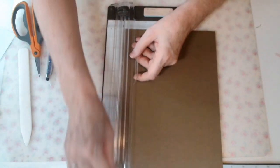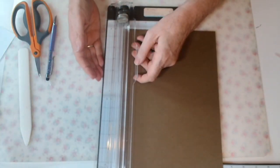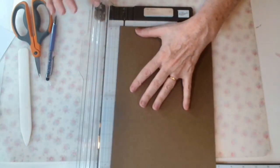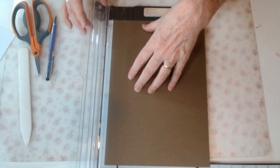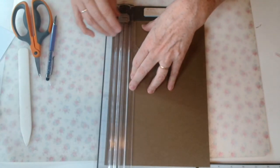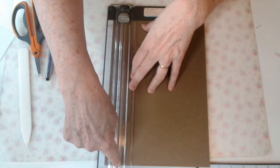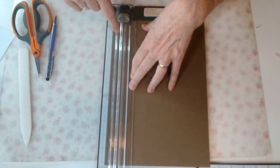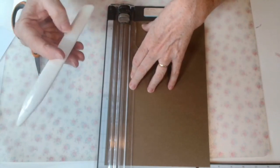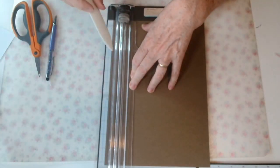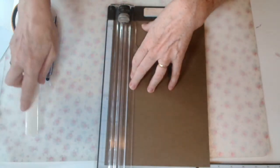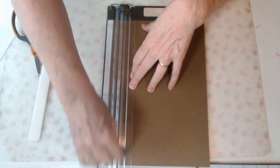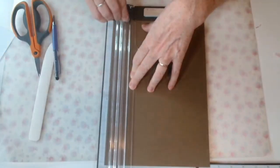I'm using my paper trimmer to score it. If you don't, you might have a scoreboard. If you've got a scoreboard, use that. If you don't have a scoreboard, measure 2.5 centimeters from the edge. Get a ruler, get a bone folder or a stylus, something that will score a line for you.